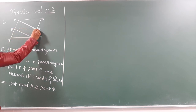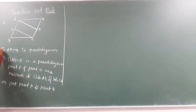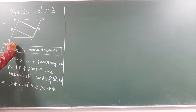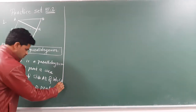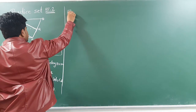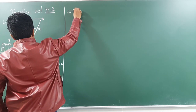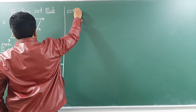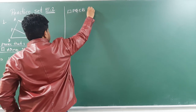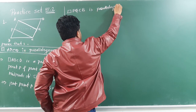Look at here — after joining this line, two new quadrilaterals are formed. The question is to prove these relations. After joining, the new quadrilateral found is quadrilateral PQCB, and PQCB is a parallelogram.